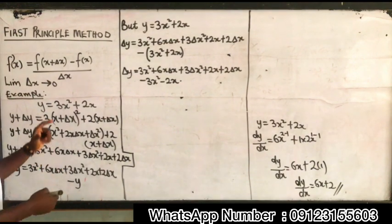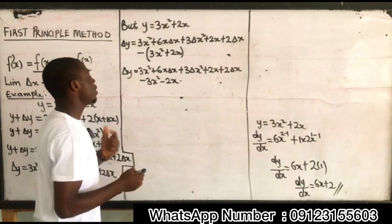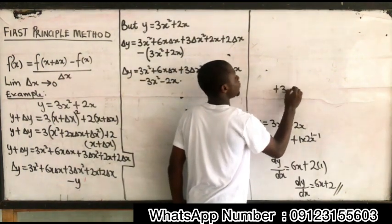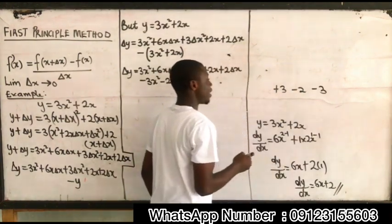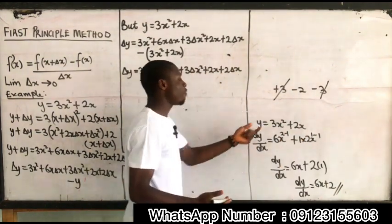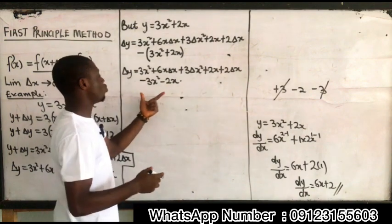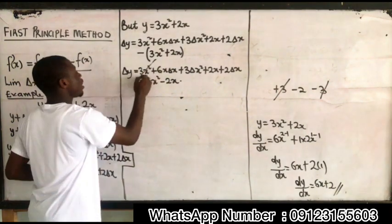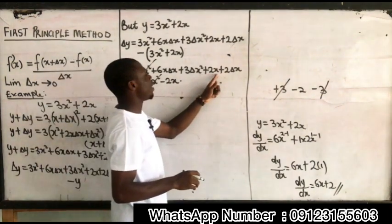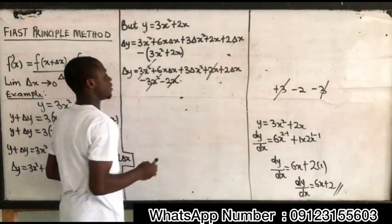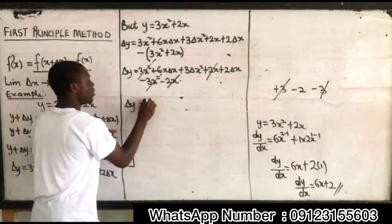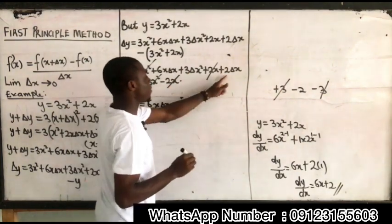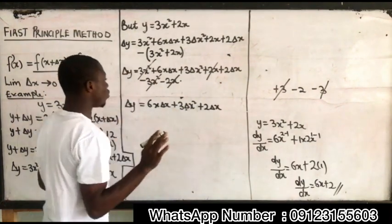Now doing the mathematical manipulation: plus 3x squared and minus 3x squared cancel out. Plus 2x and minus 2x cancel out. I am left with change in y equal to 6x change in x plus 3 change in x squared plus 2 change in x.